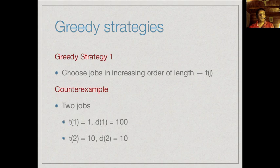Suppose we have two jobs: job one takes one time unit and job two takes 10 time units, but the deadlines are 110 respectively. The first job has a very long gap within which it can be scheduled without any penalty, whereas the second job has to finish more or less assuming it starts initially.